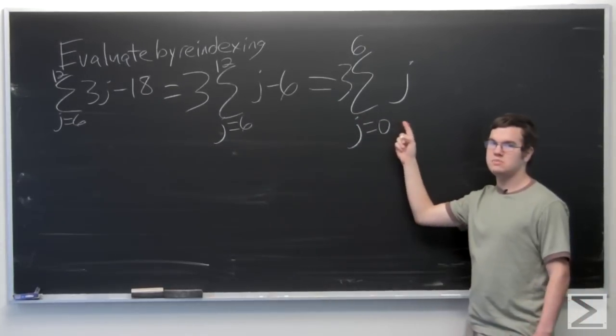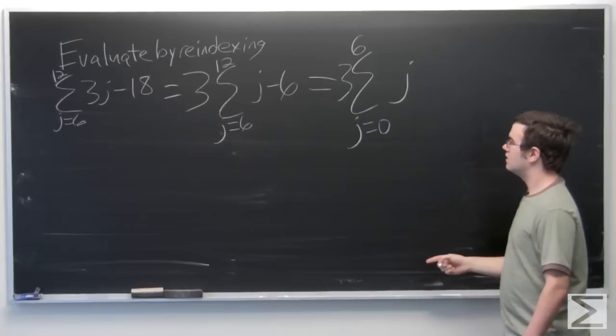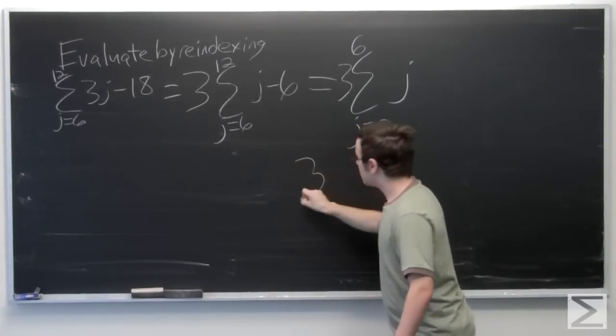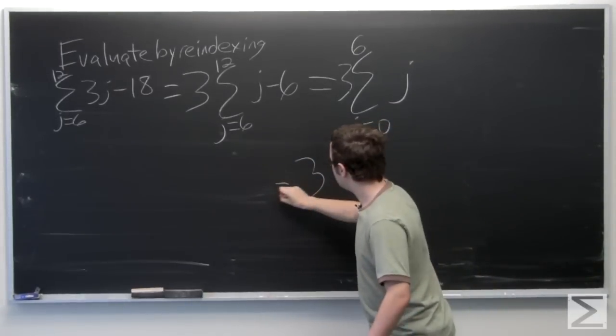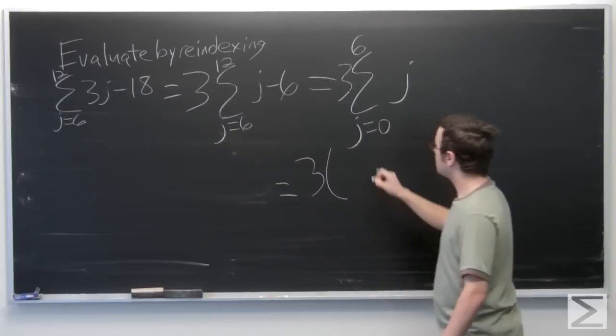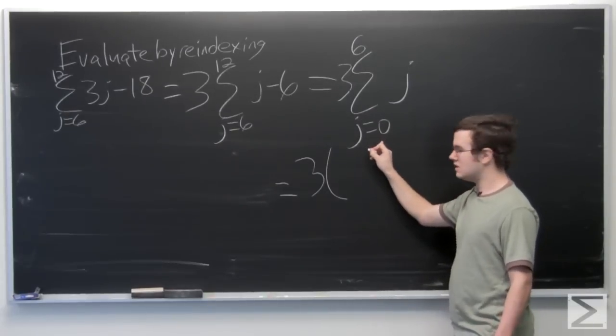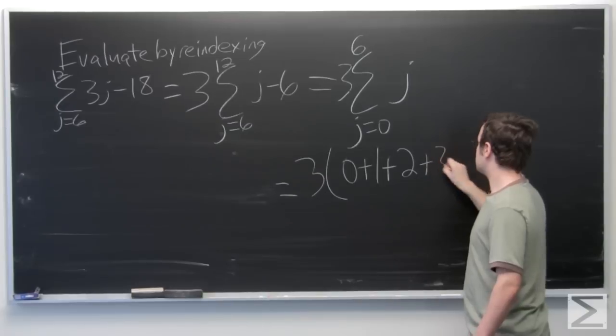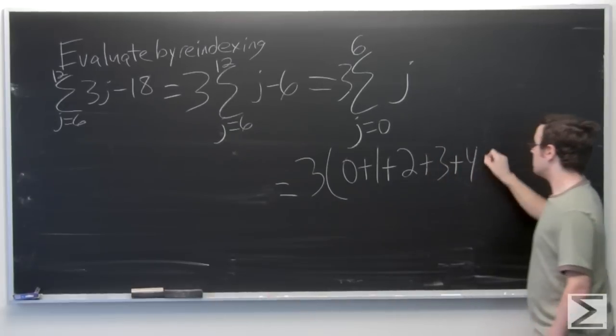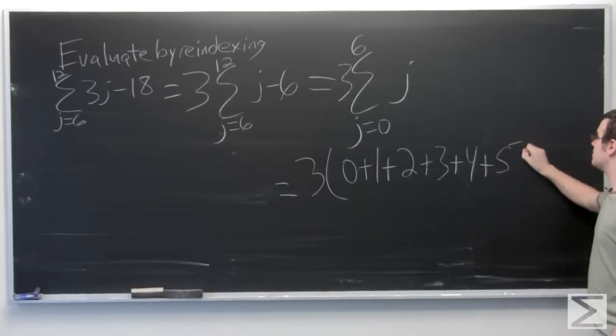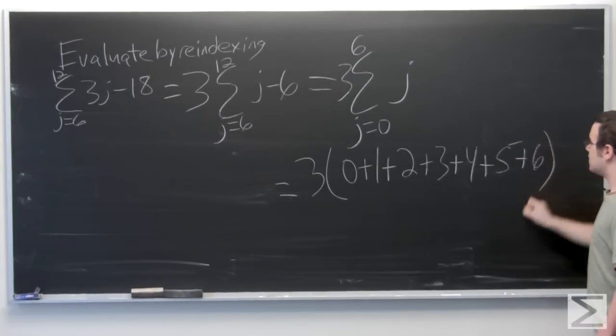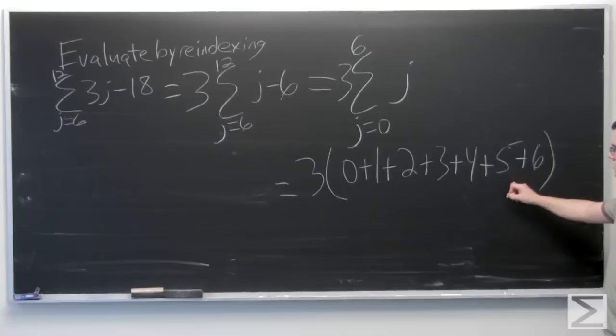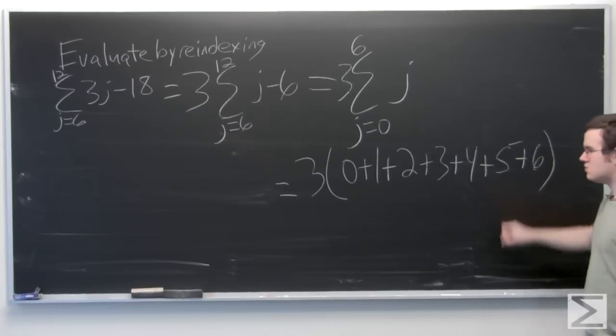And this is a pretty simple summation to do. We're going, let's do it out here. 3 times, let's start at the beginning of the index 0, plus 1, plus 2, plus 3, plus 4, plus 5, plus 6. And through arithmetic, we will see that this equates to 3 times 21,